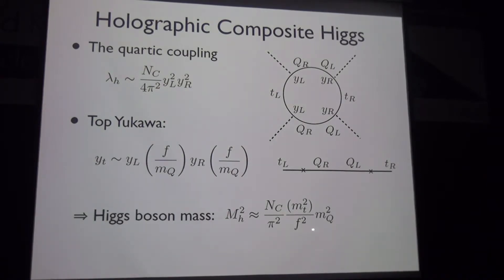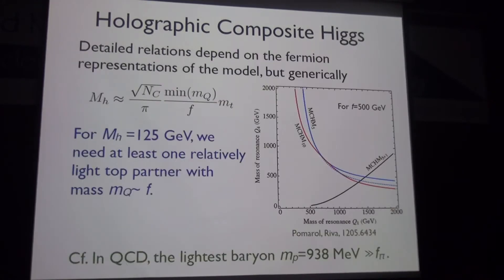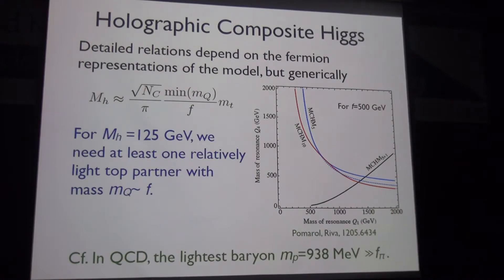This is just a rough estimate; the precise relation depends on the fermion representation. Detailed calculations by various groups find that generically there is a minimum resonance mass over F times M_Q. For the Higgs mass to be 125 GeV, one needs a relatively light top partner with mass close to the symmetry breaking scale.